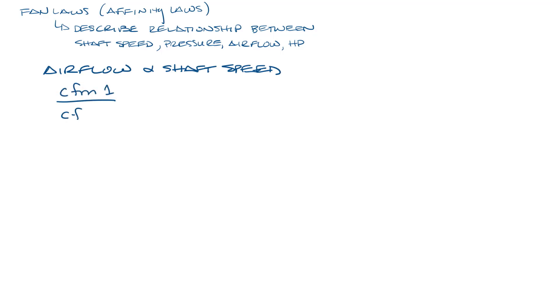The equation is CFM1 over CFM2 equals RPM1 over RPM2. So let's say we have a fan that's running 2000 CFM at 1100 RPM. How much airflow would we get at 2000 RPM?